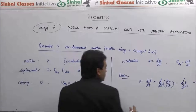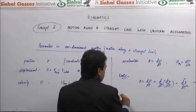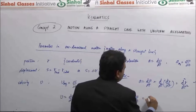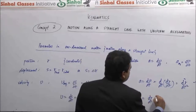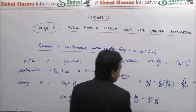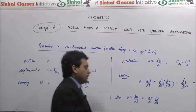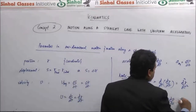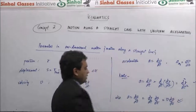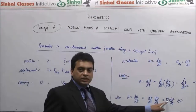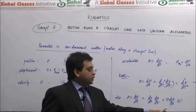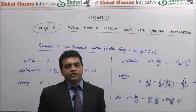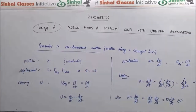Another way to define acceleration is: a = dv/dt can be written as (dr/dt)·(dv/dr), obtained by multiplying and dividing by dr. Since dr/dt is velocity, it can also be expressed as v·(dv/dr). This is an alternate way of defining instantaneous acceleration in terms of instantaneous velocity and position, whereas d²s/dt² gives it in terms of position and time.